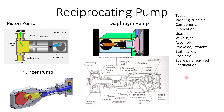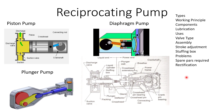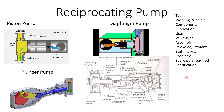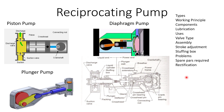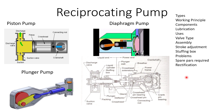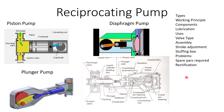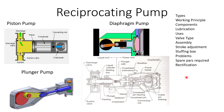In this presentation, we shall be discussing various types of reciprocating pumps like piston pump, plunger pump, and diaphragm pump. We are going to discuss the type of the pump, working principle, components, lubrication, uses, valve type, assembly, stroke adjustment, stuffing box problems, spare parts required, and rectification.